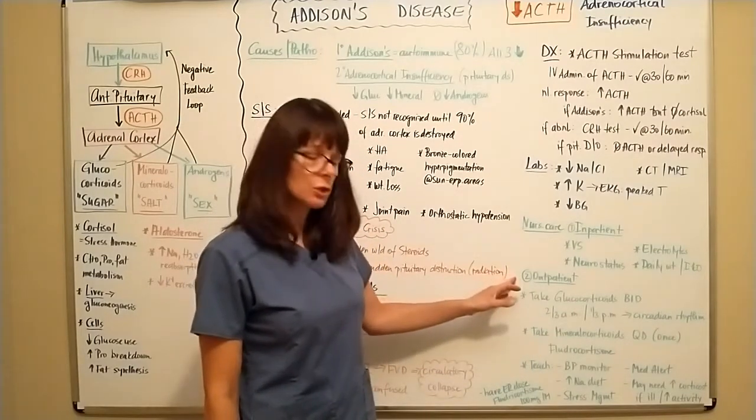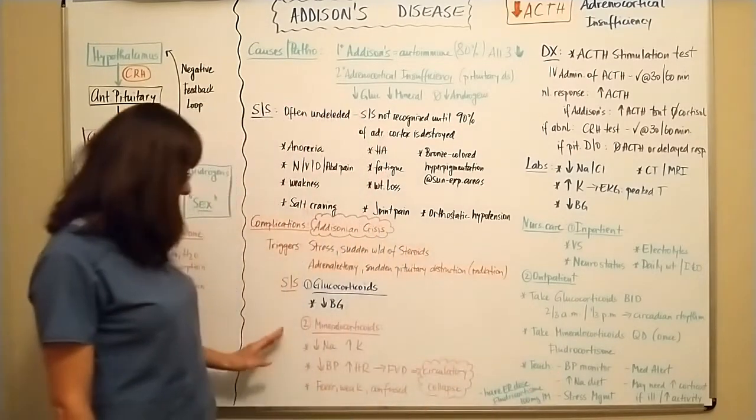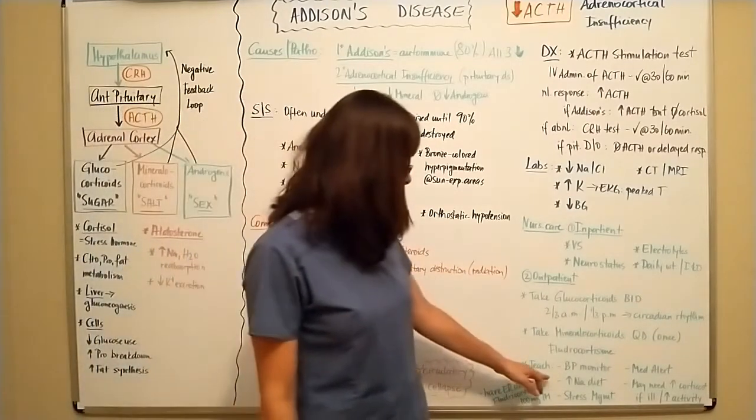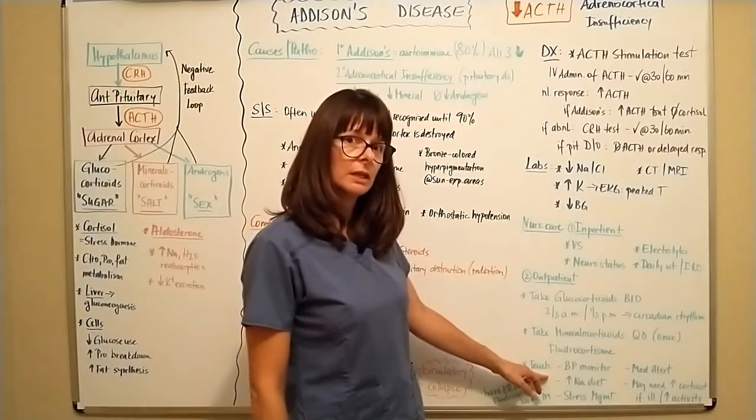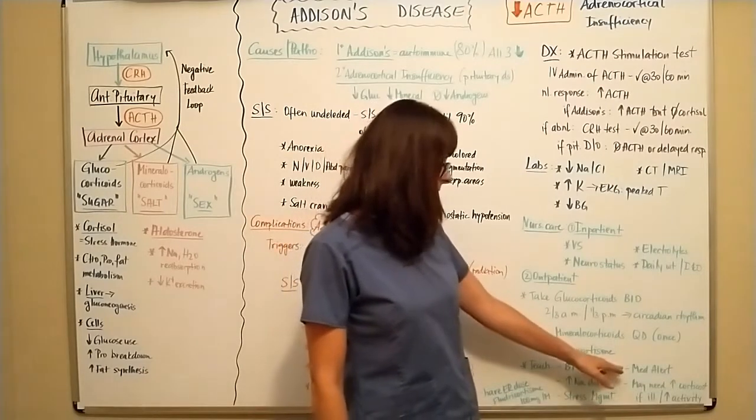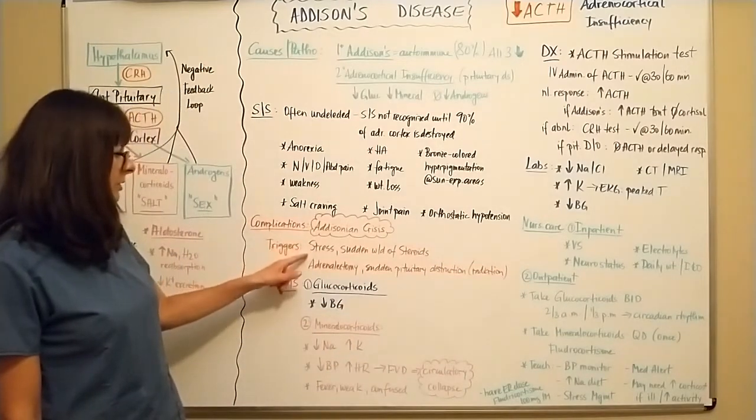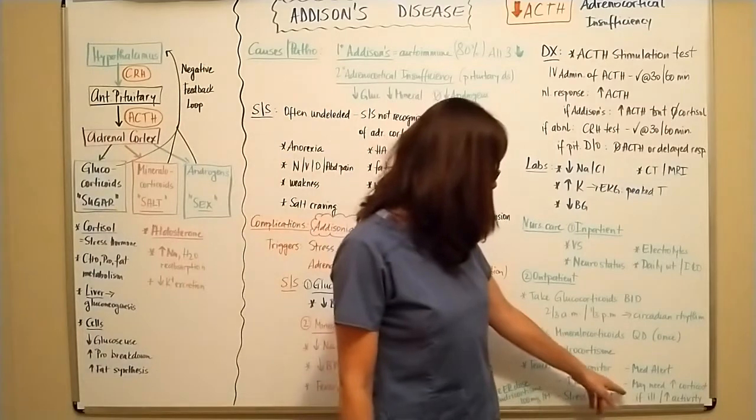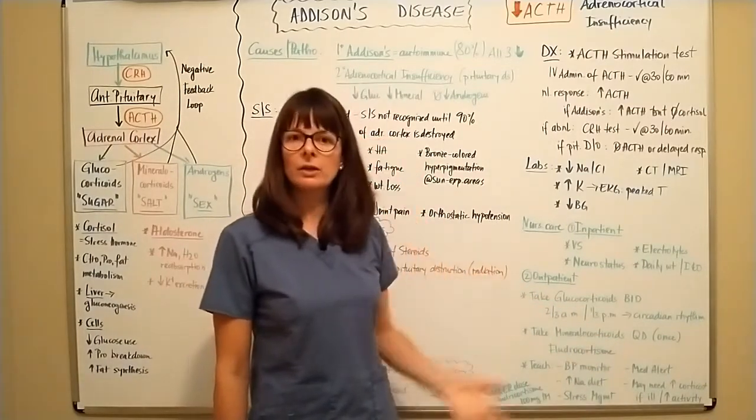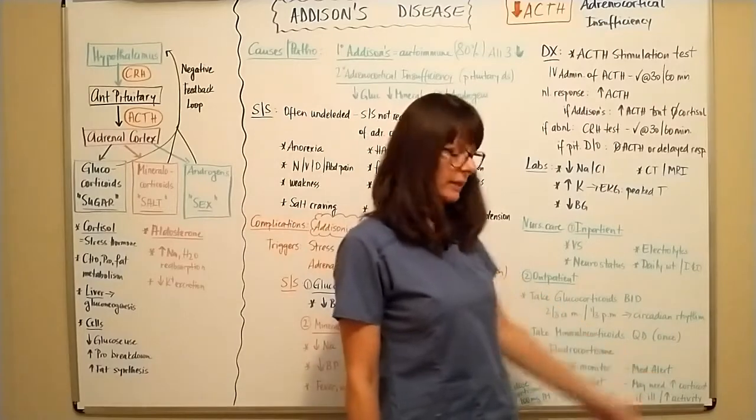And if they are managed on an outpatient basis, besides medication teaching, we would also teach them how to monitor their blood pressure at home because we know they're at risk for low blood pressure, as well as teach them to increase their sodium intake because their kidneys can't really concentrate it, to manage their stress, to wear a medical alert bracelet. Very important because we know that they can go into Addisonian crisis with increased stress and they might need increased corticosteroids if they are ill with a minor illness such as the flu or with increased activity, physical activity.